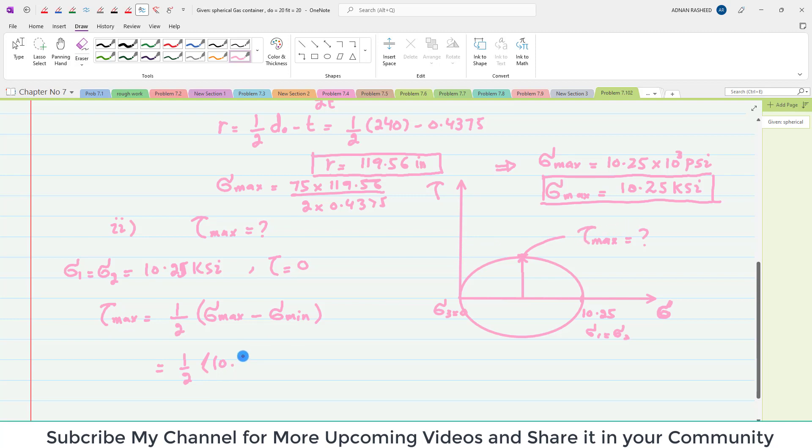You can put it: (1/2)(10.25 - 0), which is sigma 3. It will give you 5.12 ksi.